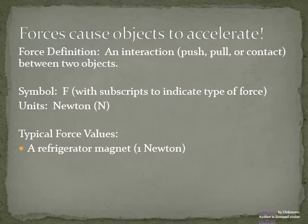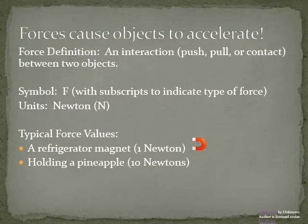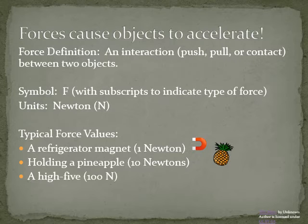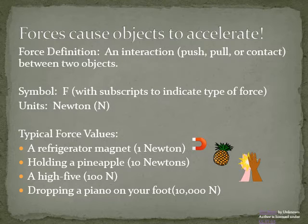If you imagine a refrigerator magnet, how hard it is stuck on the refrigerator, that would be about one Newton of force. The pineapple—if you're holding a pineapple, the amount of force it exerts on your hand would be about ten Newtons. So back to our friend the one kilogram pineapple, the amount of gravitational force acting on it is ten Newtons. Give someone a high five, it's probably about a hundred Newtons. And if you drop a piano on your foot, that would probably exert about ten thousand Newtons of force on your foot.